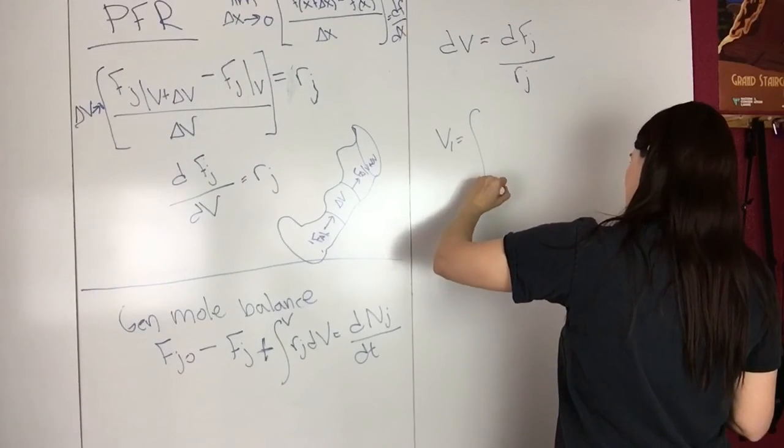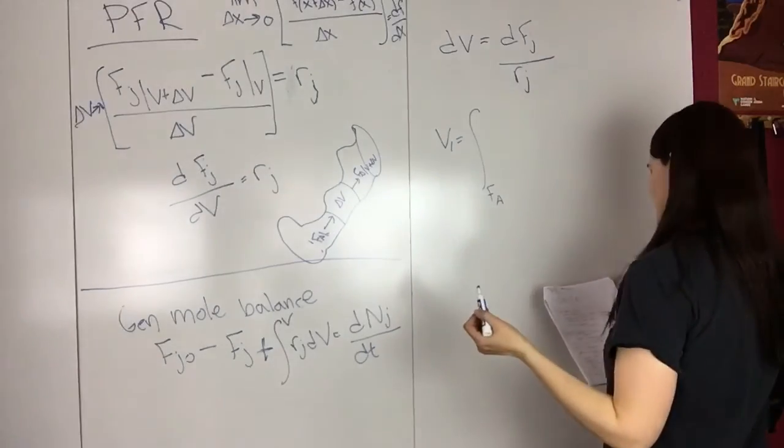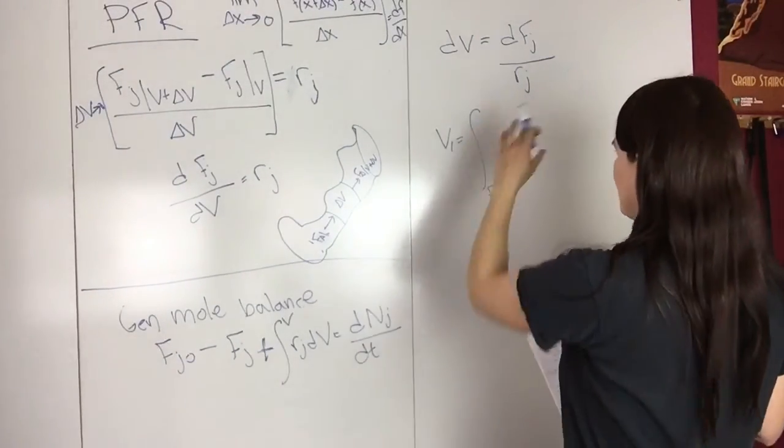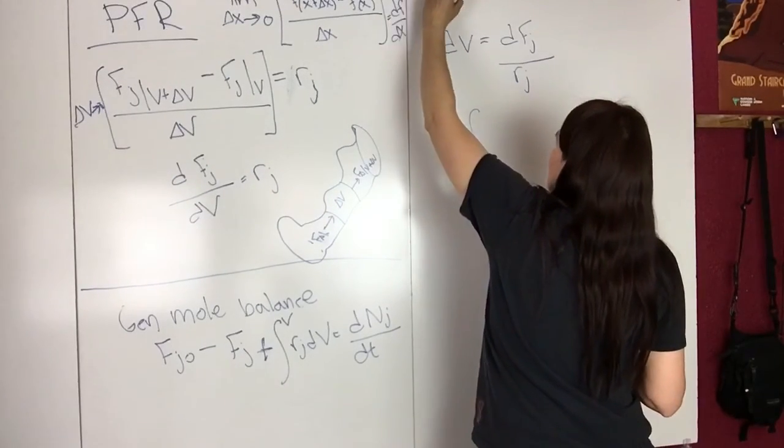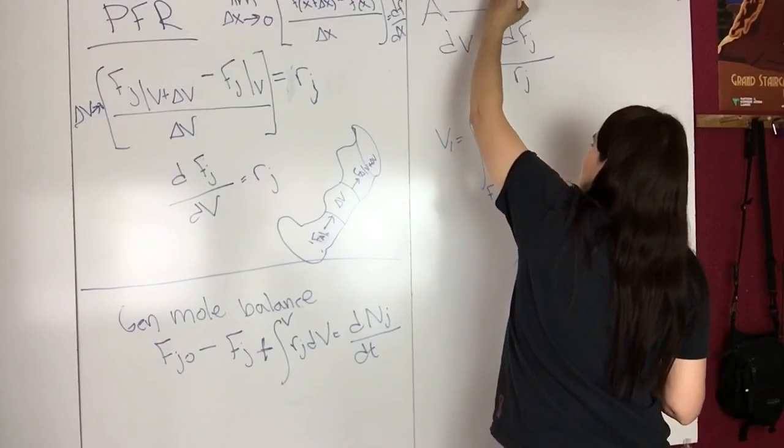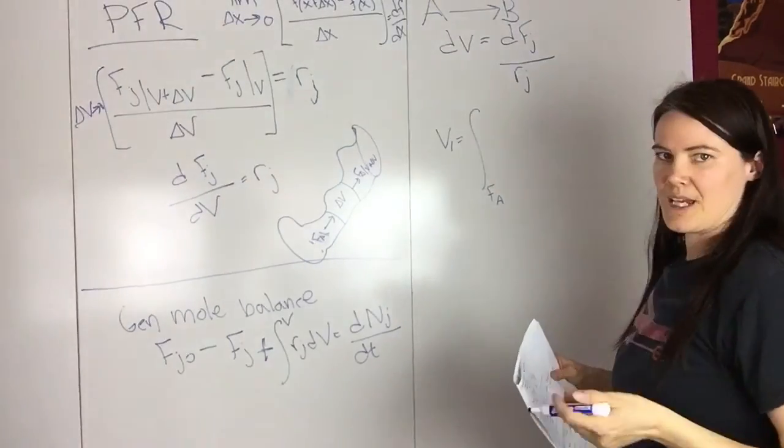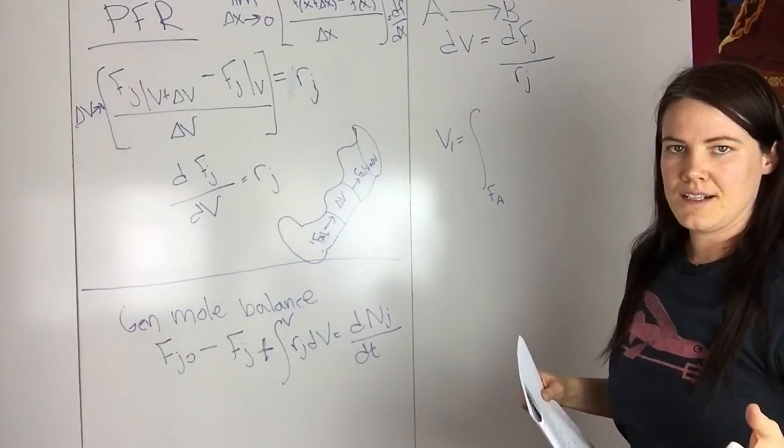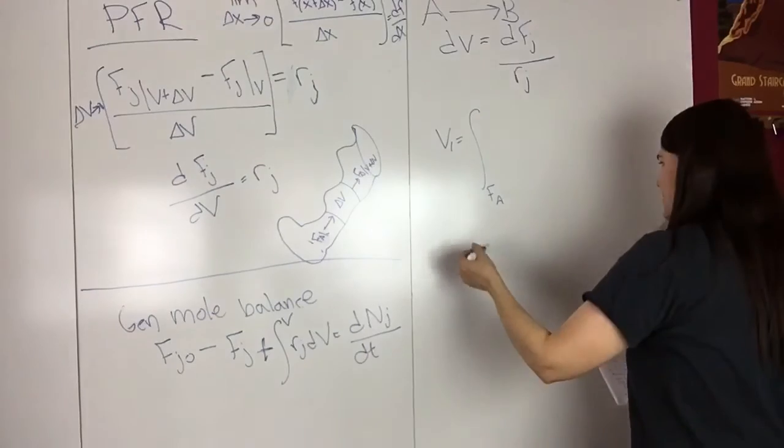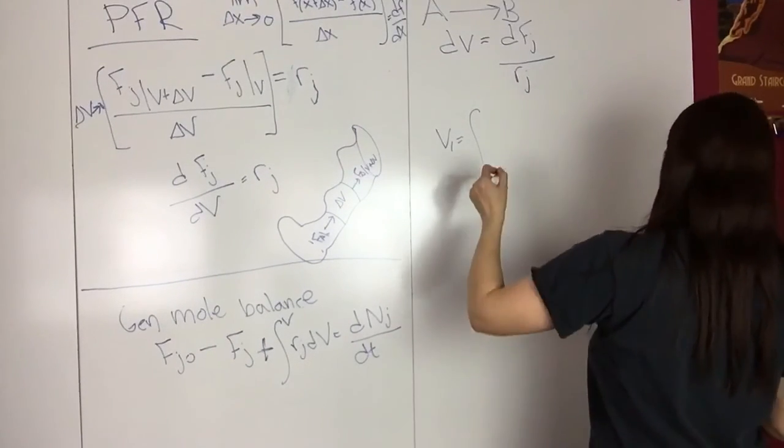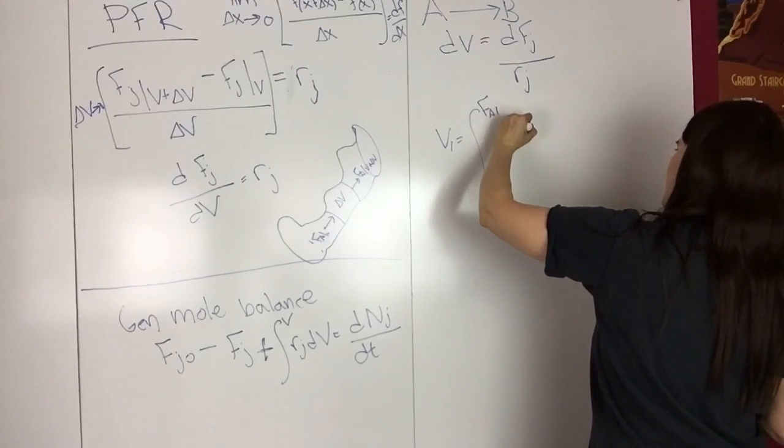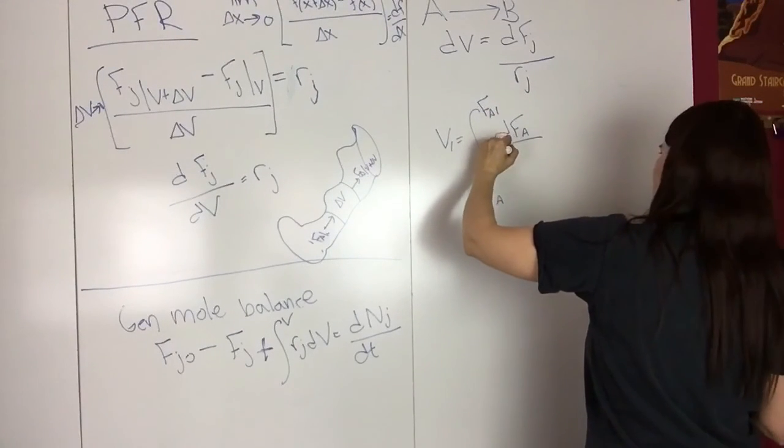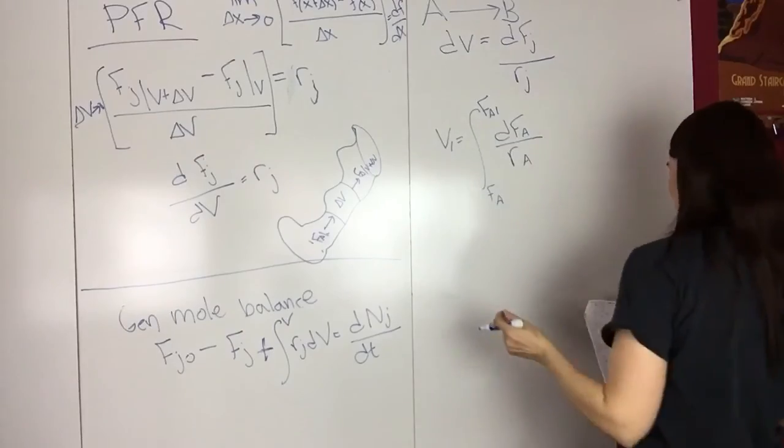Let's assume we have a reaction A to B, and we're looking at A. So V equals the integral from F_A0 to F_A of dF_A over R_A.